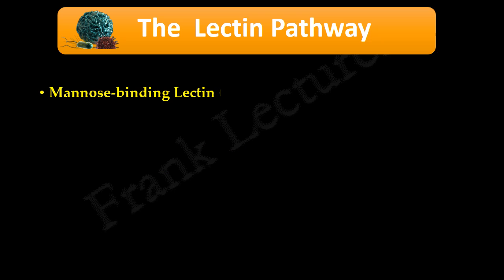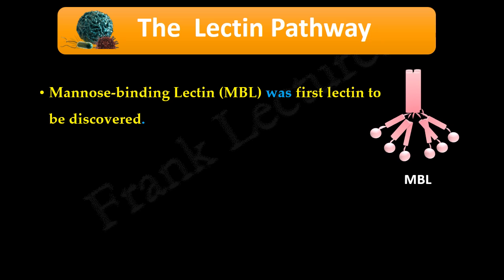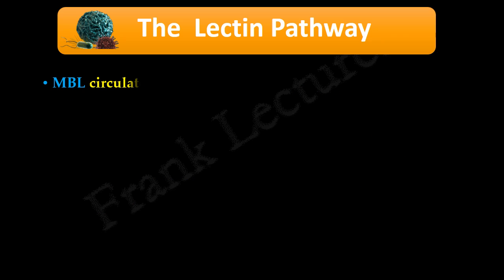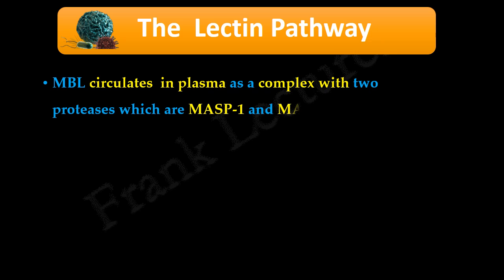Mannose binding lectin, abbreviated as MBL, was the first lectin to be discovered. MBL binds to mannose-containing carbohydrates of bacteria, fungi, protozoa, and viruses. Mannose binding lectin circulates in blood as a complex with two proteases.